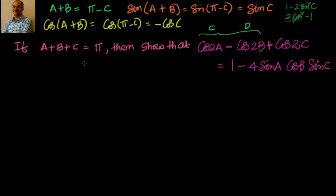If you got that as 1 minus 4 sinA sinB cosC, then it's perfectly correct. That is in the similar line so I will not be touching on that. I will try to solve this problem: cos2a minus cos2b plus cos2c. I have to prove it as 1 minus 4 sinA cosB sinC. So let's go ahead.